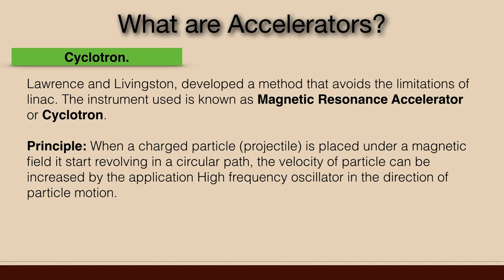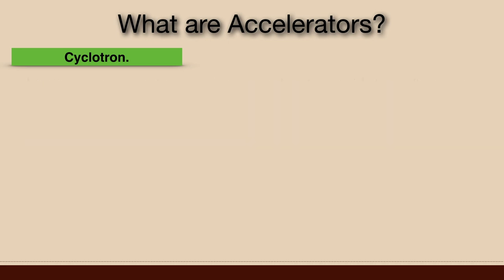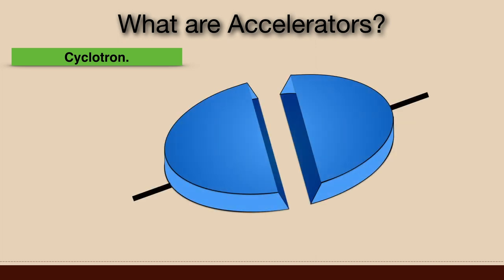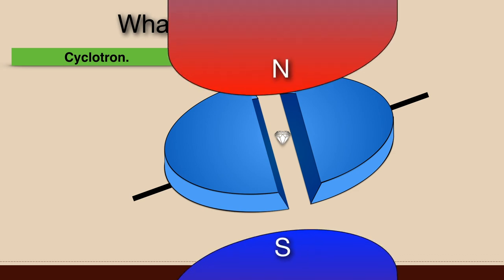The cyclotron consists of two flat semi-circular shaped metal boxes called Ds. These hollow boxes are slightly separated from each other as shown in the figure. A source of projectile is placed at the midpoint of the gap between two Ds. The two Ds are connected with two terminals of high-frequency oscillator so that they act as the electrodes. The Ds are enclosed in a large insulated metal box. The whole metal box is placed between two poles of strong magnets which provide magnetic field perpendicular to the plane of the D.